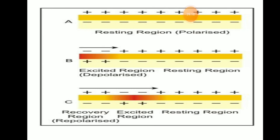In the resting state — when the neuron is not conducting an impulse — it is in a polarized state. The interior of the axon is more electronegative as compared to the extracellular fluid, which is electropositive due to cations. The major cations present in the extracellular fluid (ECF) are sodium and potassium.